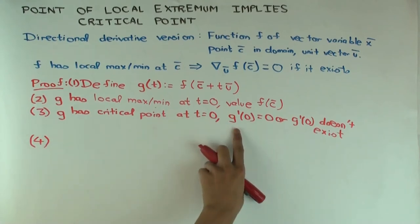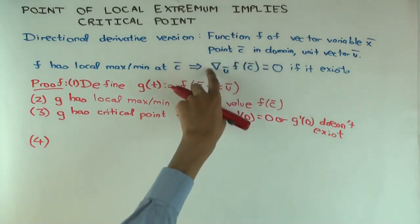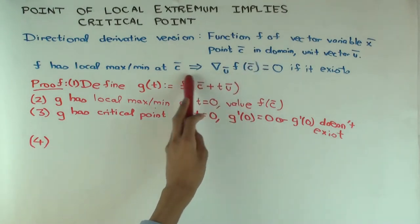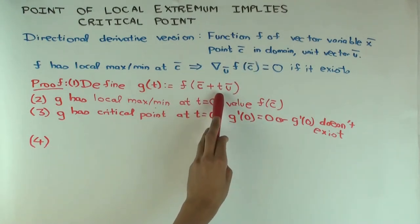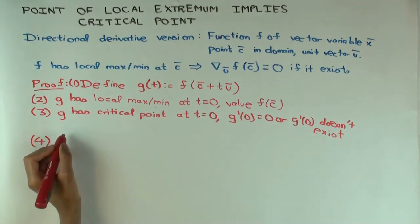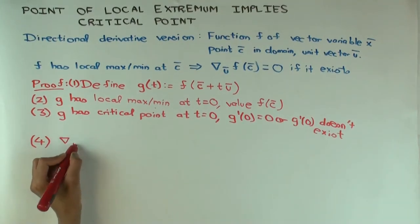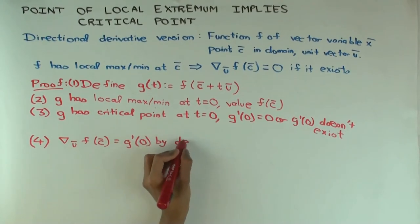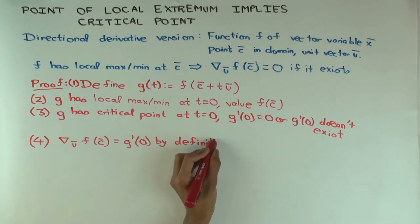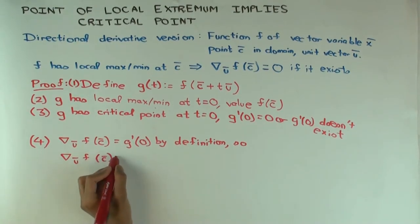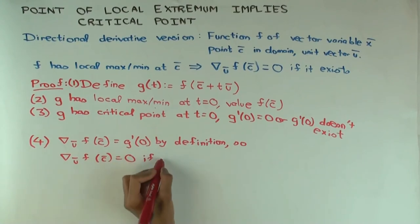Step 4: What is g'(0)? Going back to the definition of the directional derivative, one way of defining it is as the derivative of this restricted function at t = 0. So g'(0) is actually the same as the directional derivative: ∇ᵤf(c) = g'(0) by definition. Building on step 3, therefore either ∇ᵤf(c) = 0 or it doesn't exist.